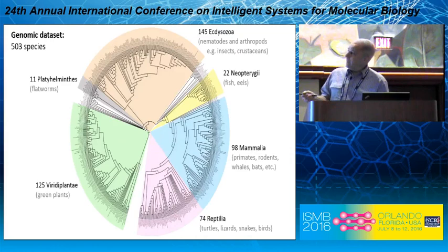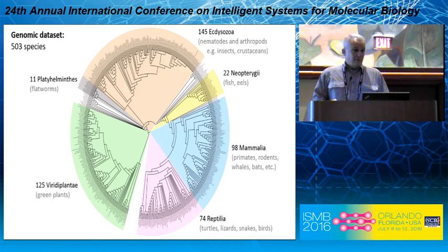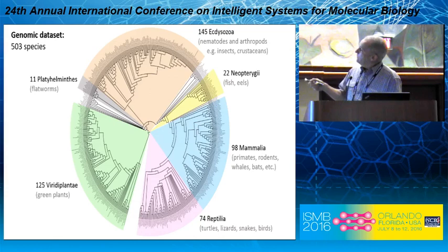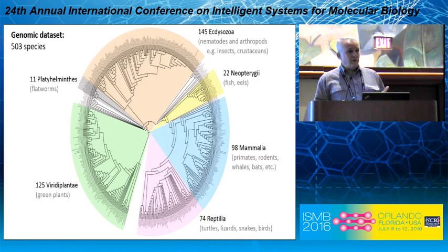We went looking across the tree of life. Our dataset included genomes from 503 species — everything we could scrape off the internet, plus four that were available from people who hadn't yet published them. As you can see, they're pretty well scattered across the tree of life. We've got ecdysozoa, ray-finned fish, mammals, reptiles, plants, flatworms. And we had a method for finding L1s, which was basically alignment-based and iterative.